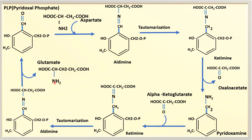To summarize the mechanism: note the coenzyme (PLP), then entry of the first substrate, formation of aldimine, then ketimine, then tautomerization, release of oxaloacetate, formation of pyridoxamine, entry of alpha-ketoglutarate, formation of ketimine, again tautomerization, again formation of aldimine, release of glutamate, and regeneration of the original pyridoxal phosphate.